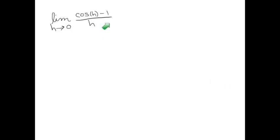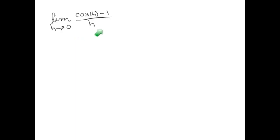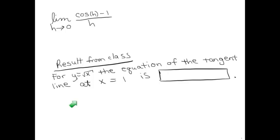Here's another limit we're going to need: the limit as h goes to zero of (cos(h) − 1) divided by h. It seems kind of random, but it will make sense once we're taking the derivative of cosine, so let's figure out what it is in advance.